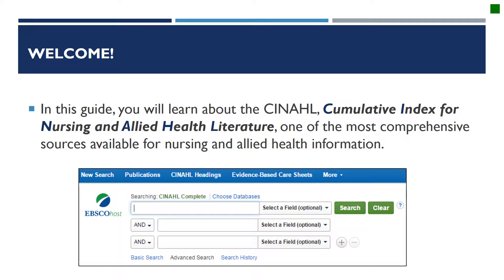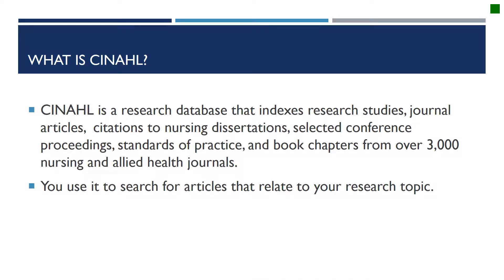In this guide you will learn about CINAHL, the Cumulative Index to Nursing and Allied Health Literature, one of the most comprehensive sources available for nursing and allied health information. CINAHL is a research database that indexes research studies, journal articles, citations to nursing dissertations, selected conference proceedings, standards of practice, and book chapters from over 3,000 nursing and allied health journals. You use it to search for articles that relate to your research topic.